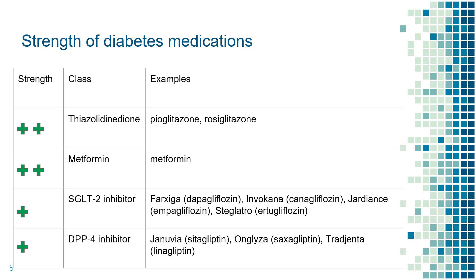The list continues. Two plus signs means this type of medication is fairly strong, translating to an A1C reduction of 1 to 2 points and a blood sugar reduction of 30 to 60 milligrams per deciliter on average. One plus sign means this type of medication is moderate — it reduces A1C by 0.5 to 1 points on average, which translates to a blood sugar reduction of 15 to 30 milligrams per deciliter on average.